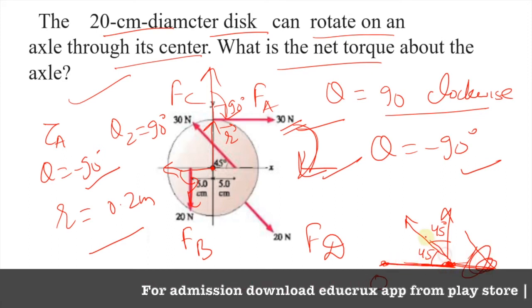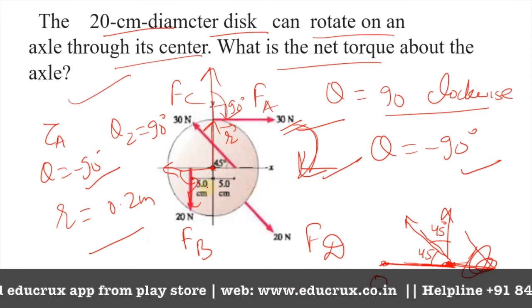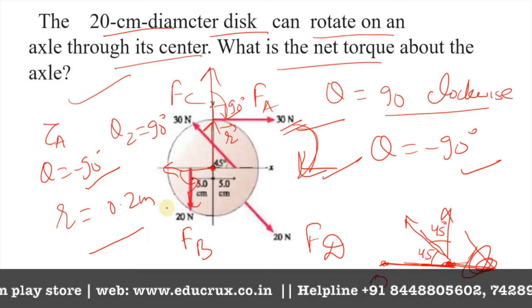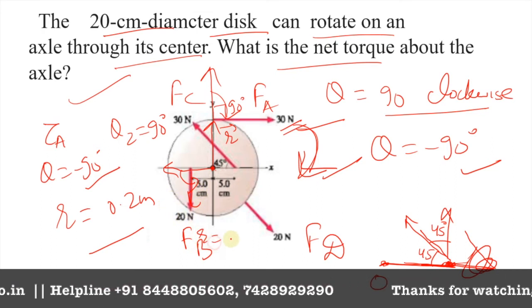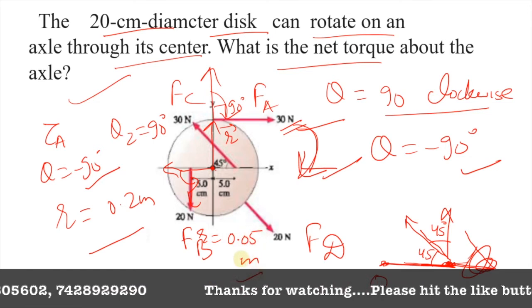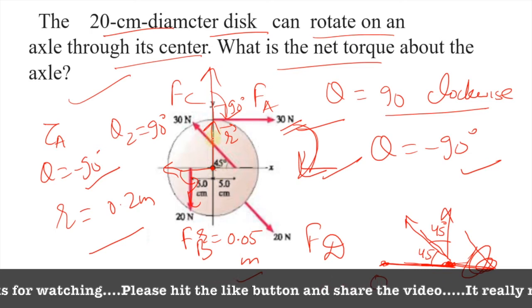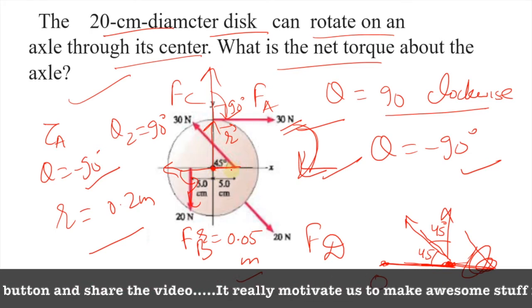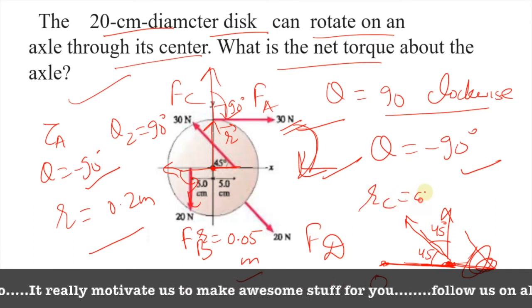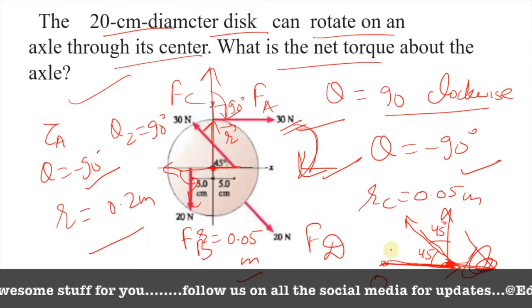For force B, the r was 5 centimeters, that will be 0.05 meters. For force C, again this is the point of rotation, so rC will be equal to 0.05 meters.